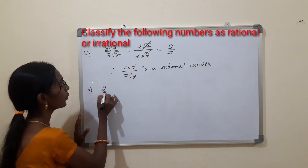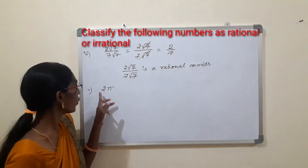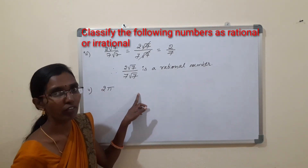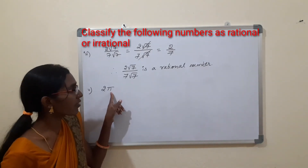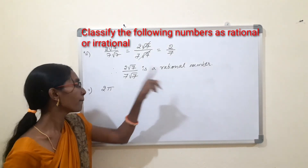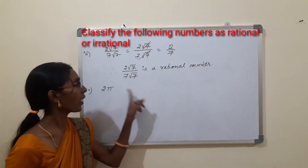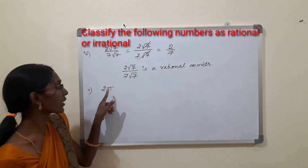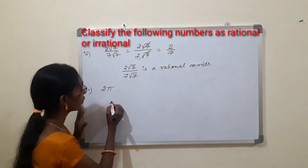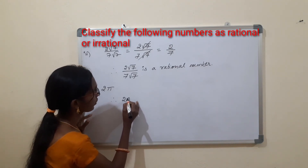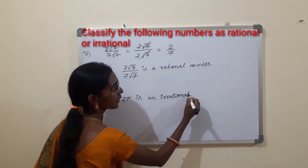The fifth one is 2π. To know whether 2π is rational or irrational, we need to know whether π is rational or irrational. Although we commonly use 22/7 or 3.14, that is not the exact value. π is irrational, and multiplying an irrational number by 2 gives an irrational number. Therefore 2π is an irrational number.